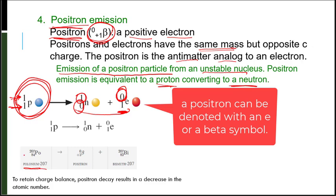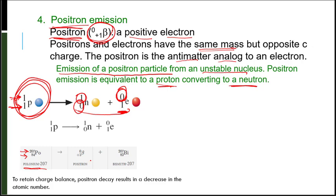Let's look at an example: polonium-207, atomic number 84, mass 207. When it decays to bismuth-207, we can see I went from 84 to 83, so I need a proton down here. But 207 to 207 — it can't be a proton because a proton would have a mass of one. So it needs to have zero up top, meaning it's a positron. To retain charge balance, positron decay results in a decrease in the atomic number — I went from 84 to 83 — but the mass stayed the same.